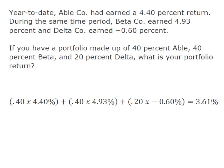Looking at an example: year-to-date, Able Company has earned a 4.40% return. That's one of my returns, and during the same time Beta earned 4.93%, but poor Delta had a negative 0.60%.